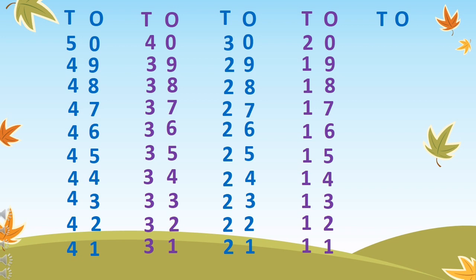Now, what will come before 11? What is the smaller number than 11? Yes — 10. So let's count 10 to 1: 10, 9, 8, 7, 6, 5, 4, 3, 2, and 1.